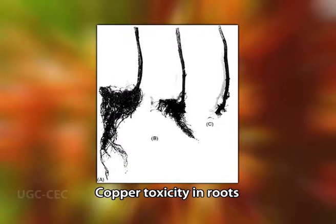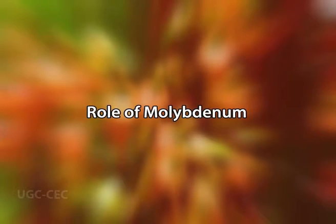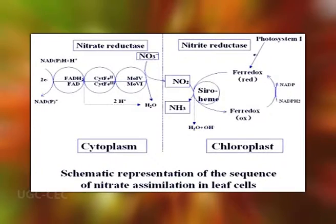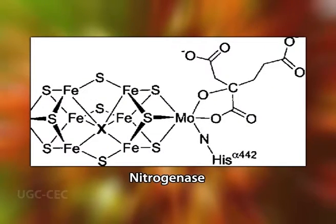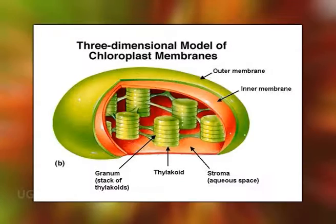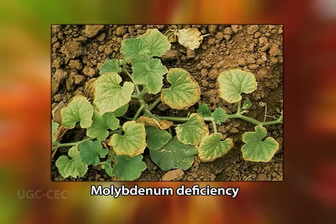Molybdenum is available to plants as molybdate (MoO₄²⁻). It is a necessary component of two major enzymes in plants: nitrate reductase and nitrogenase, both required for normal assimilation of nitrogen. Molybdenum is also required in ascorbic acid metabolism and has a protective role in the chloroplasts. The first indication of a molybdenum deficiency is general chlorosis between veins and necrosis of the older leaves.